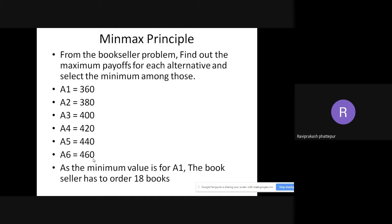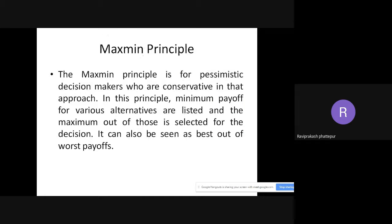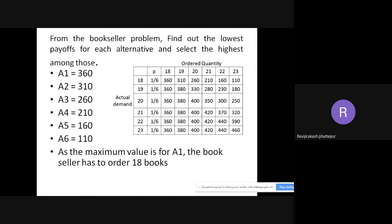The minimax and maximin principle: for minimax, go from left to right, find the maximum values, then take the minimum of all those maximum values from the different choices you have. For maximin, go from left to right, find the minimum payoff of all the different choices, then take the maximum out of those.